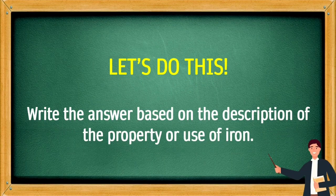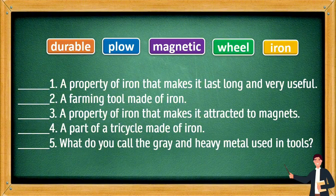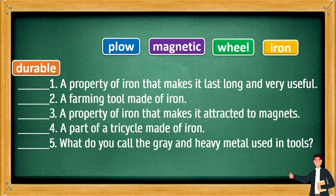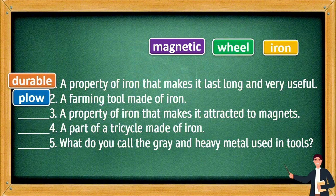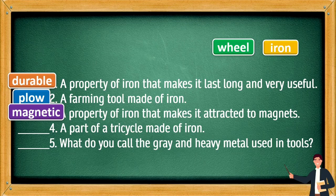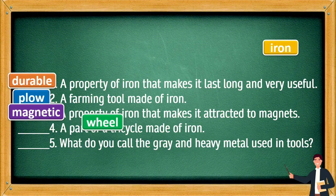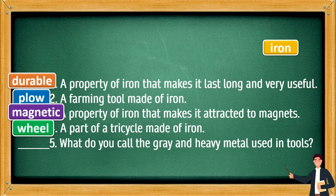Let's do this! Write the answer based on the description of the property or use of iron. A property of iron that makes it last long and very useful — this is durable. A farming tool made of iron — this is a hoe. A property of iron that makes it attracted to magnets — this is magnetic. A part of a tricycle made of iron — this is iron. What do you call the gray and heavy metal used in tools? This is iron.